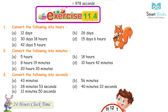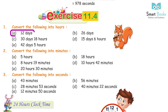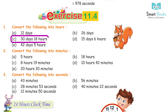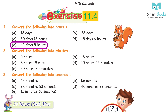Exercise 11.4, Question 1: Convert the following into hours. A. 12 days = 288 hours. B. 26 days = 624 hours. C. 30 days 18 hours = 738 hours. D. 15 days 6 hours = 366 hours. E. 42 days 5 hours = 1013 hours.